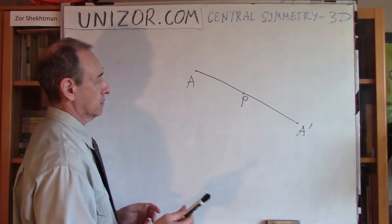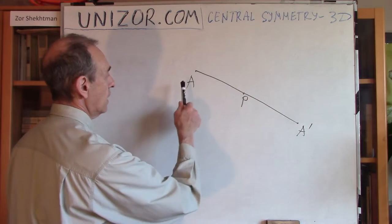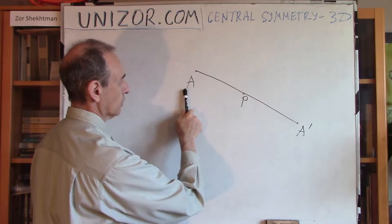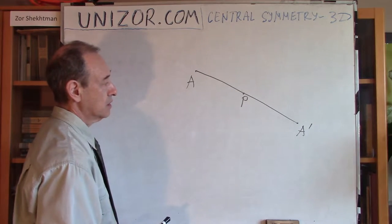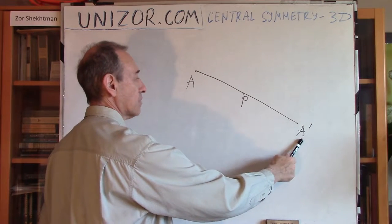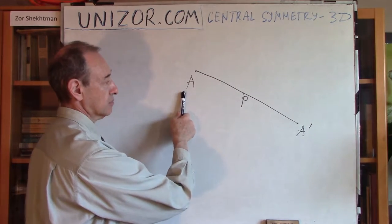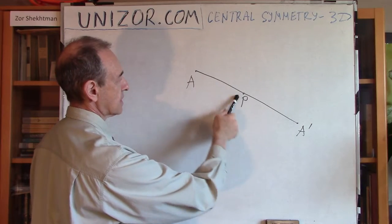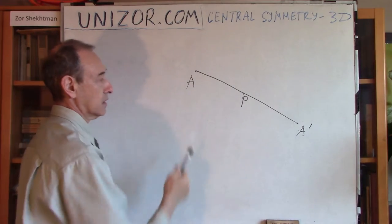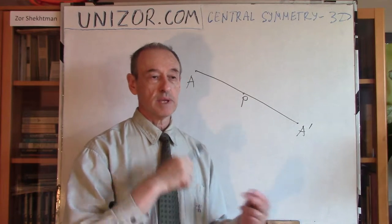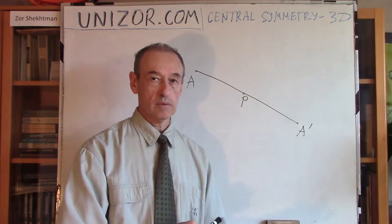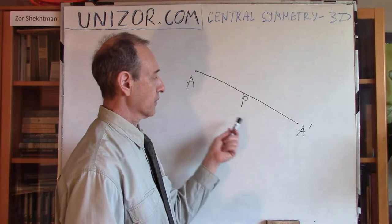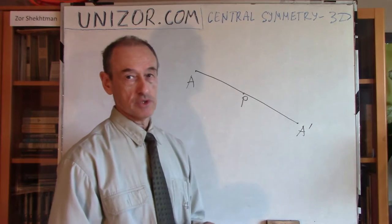Let's mention a very trivial fact: if you build a point A prime centrally symmetrical to A relative to point P, then starting from A prime you will get point A back, because you draw the same line and extend by the same length, so you will definitely hit point A. This means that if A is symmetrical to A prime, then A prime is symmetrical to A. This is a symmetrical relationship between an original prototype and its image.